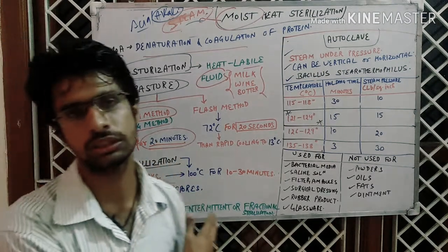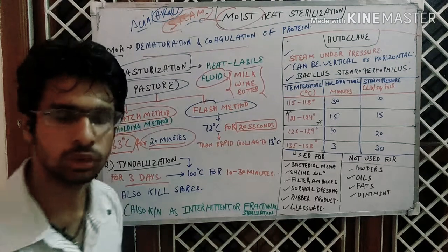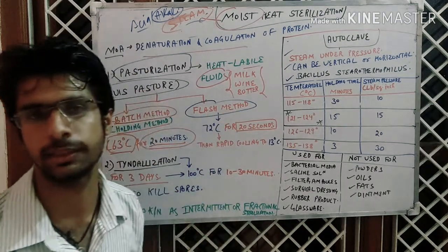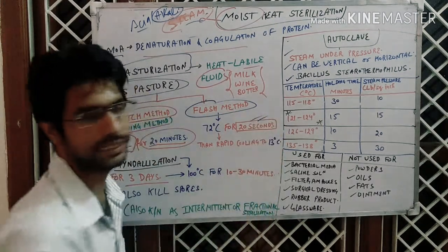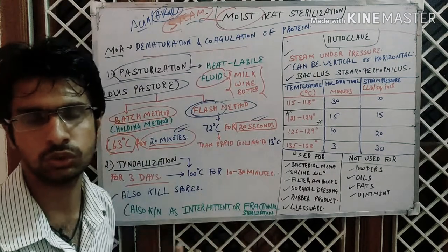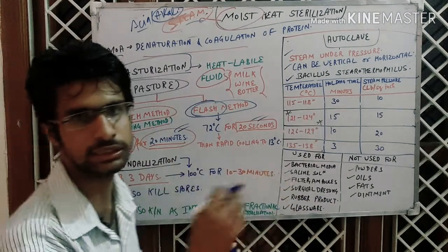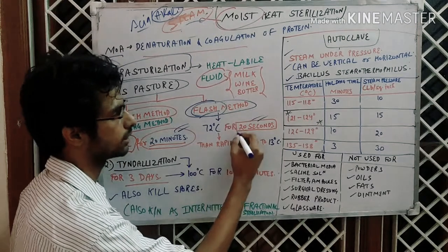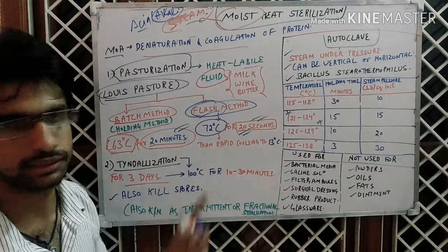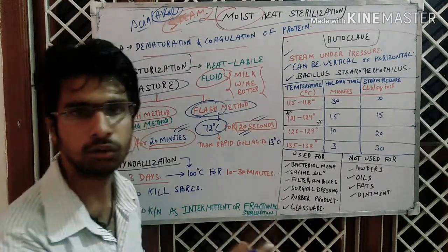The batch method is not used too much. The commonly used method is the flash method. One advantage of the flash method is that we can produce product in very large quantities. In the flash method it is only 20 seconds, compared to 20 minutes in the batch method. The temperature is increased — that's why the term 'flash' is used. The flash method is 72 degrees Celsius for 20 seconds, while the batch method is 63 degrees Celsius for 20 minutes.